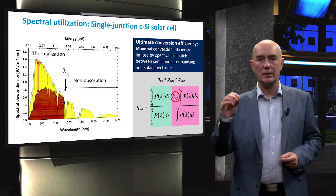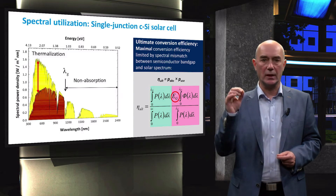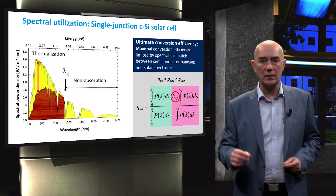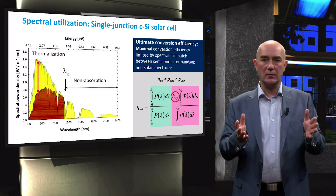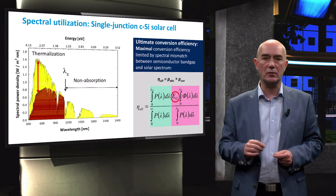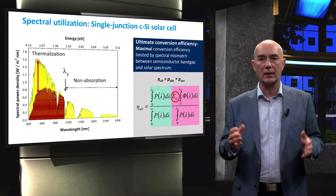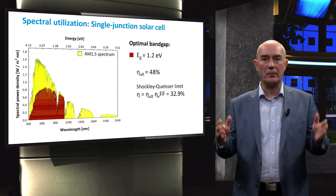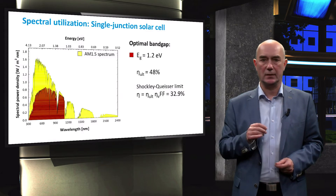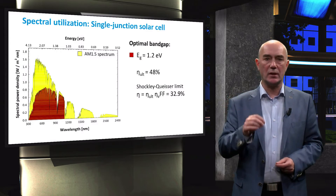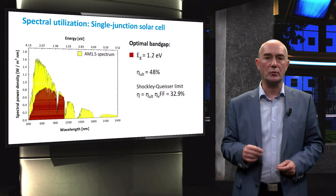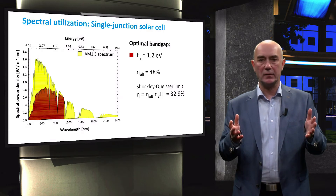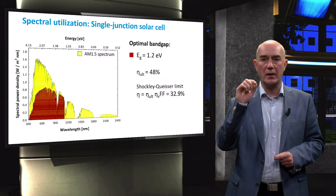This efficiency does not take additional optical and collection losses into account. As we have learned earlier in this week, the ultimate conversion efficiency is calculated with this equation. The band gap of the material is taken into account because solar cells can efficiently use only photons that have a smaller wavelength than the wavelength corresponding to the band gap of the absorber. The maximum ultimate conversion efficiency of the AM1.5 spectrum is 48%, achievable with a single junction solar cell having an absorber band gap of 1.2 eV. When the Shockley-Queisser approach is applied and the band gap utilization efficiency and fill factor are taken into account, the efficiency drops to around 33%.